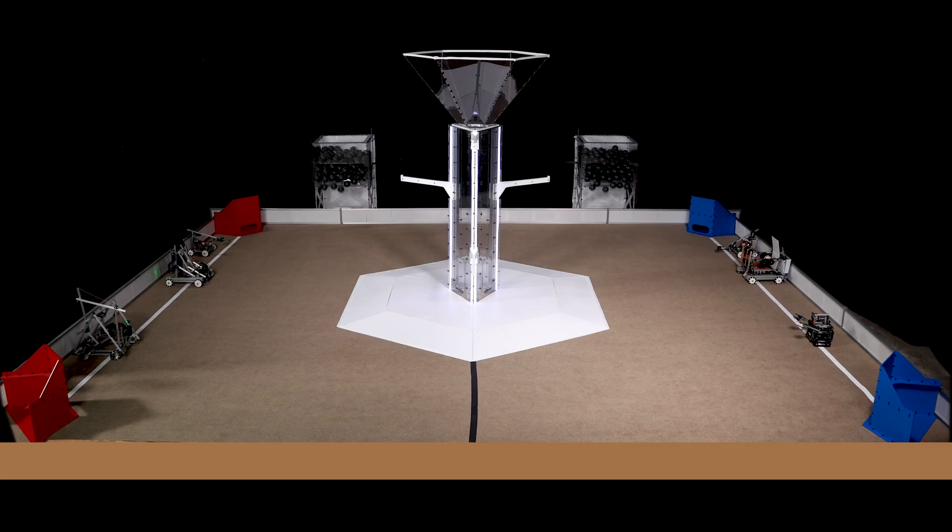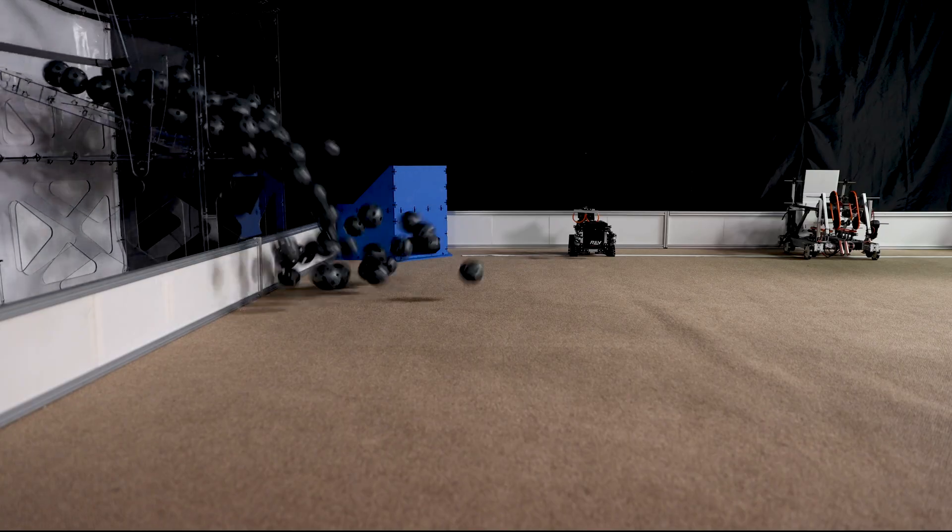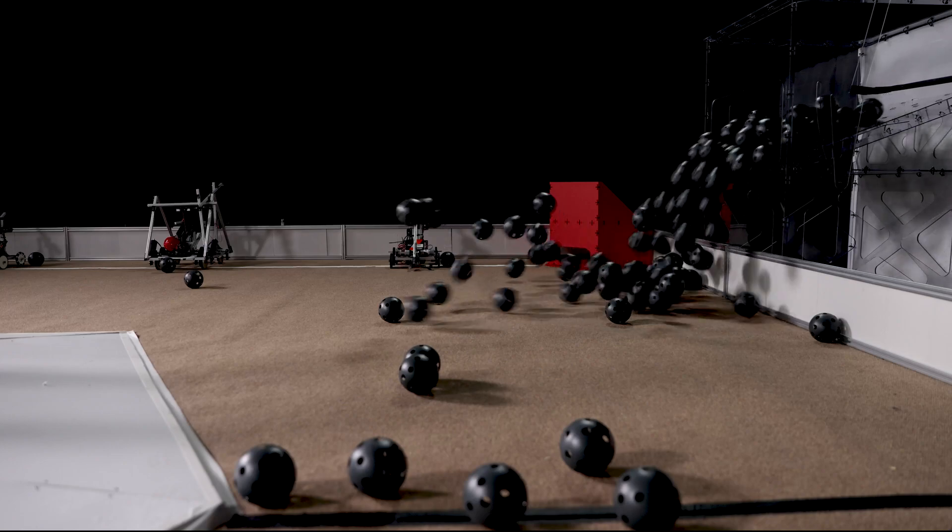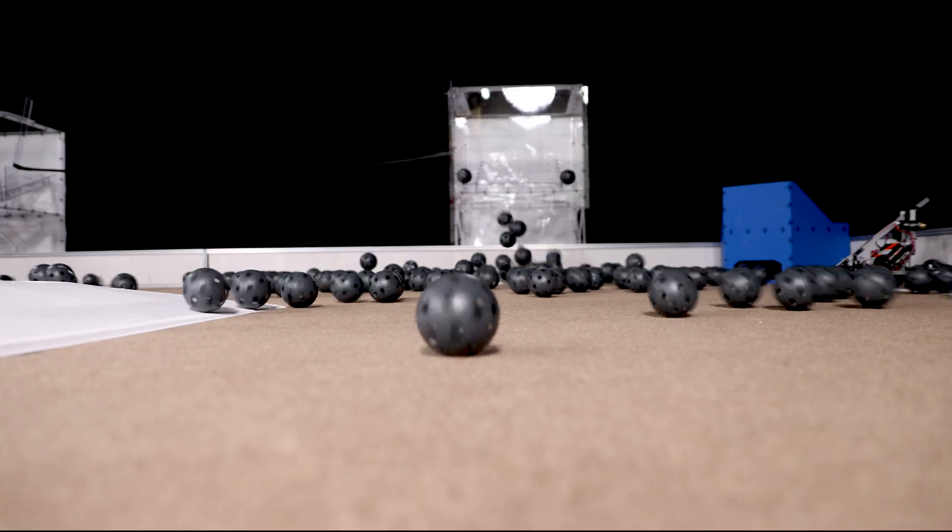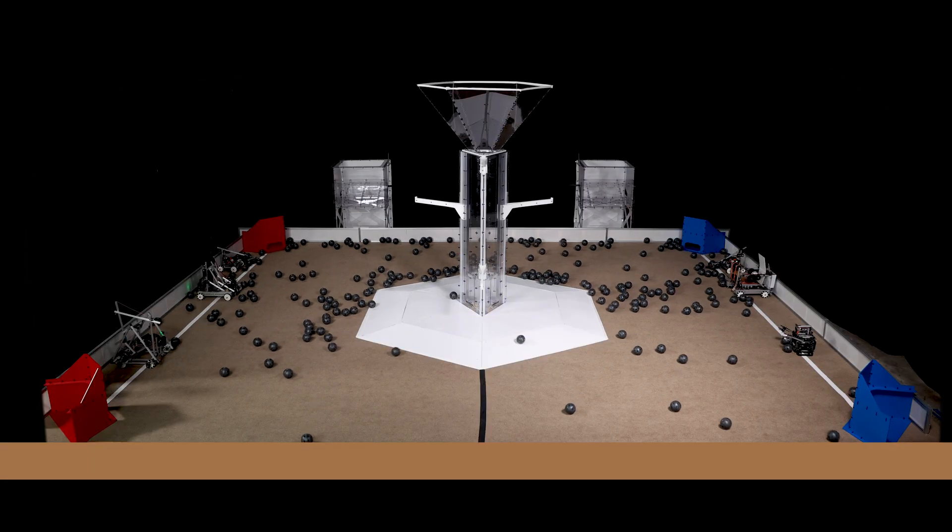The match begins when the two combustion bins release approximately 240 black carbon elements onto the playing field surface, representing the carbon dioxide emissions generated by combustion, the process of burning a fuel.